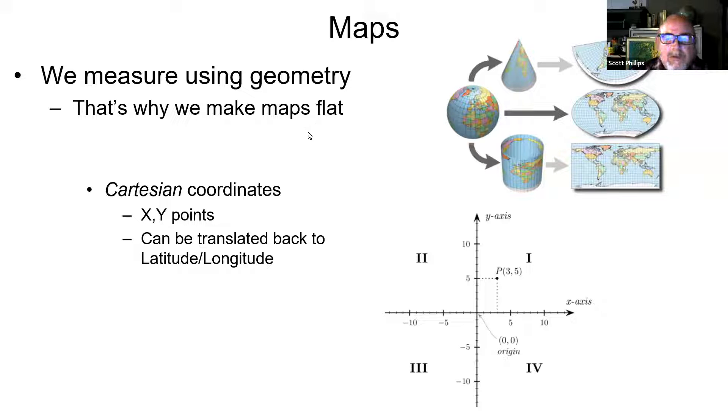Next, let's talk about projected coordinate systems. One reason for map projections, it's not just to make maps flat for practical purposes, but because it allows us to use geometry. Once we make a map flat, we can turn it into a Cartesian coordinate system with x and y that we can use to do a lot of the math of geometry like measuring lengths and areas.